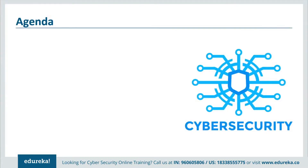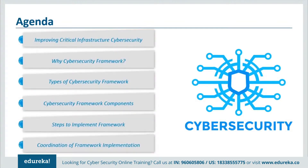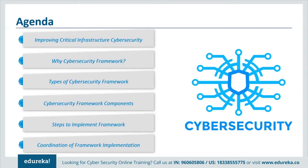So first, let's have a look at the agenda of today's session. We'll see how the US government recognized the need for reliable function to secure the national and economic infrastructure. Next, we'll discuss the importance of cybersecurity frameworks and why it is required in an organization. Then I'll tell you about different types of frameworks, the components of cybersecurity frameworks, what steps are required to implement frameworks, and finally, a common flow of information and decisions at different levels within an organization.